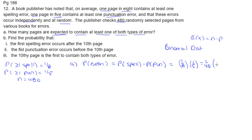Or in this case, 1/40 times 480. And we're going to get 12 as our expected value of pages with both kinds of errors.